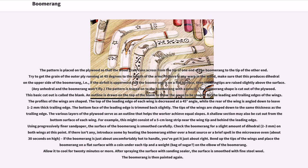The pattern is placed on the plywood so that the wood grain runs across from the tip of one end of the boomerang to the tip of the other end. Try to get the grain of the outer ply running at 45 degrees to the length of the arms. If there is any warp in the wood, make sure that this produces dihedral on the upper side of the boomerang, so that if the airfoil is uppermost and the boomerang is on a flat surface, the wing tips are raised slightly above the surface. The pattern is traced onto the boomerang with a pencil, and the boomerang shape is cut out of the plywood — this basic cutout is called the blank. An outline is drawn on the top of the blank to show the areas to be shaped for the leading and trailing edges of the wings. The profiles of the wings are shaped: the top of the leading edge of each wing is decreased at a 45-degree angle, while the rear of the wing is angled down to leave a 1–2 mm thick trailing edge. The various layers of the plywood serve as an outline that helps the worker achieve equal slopes.